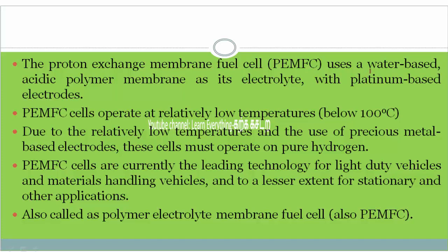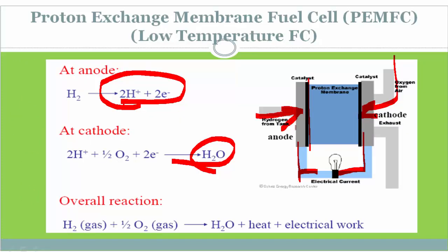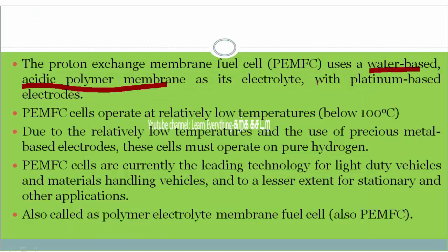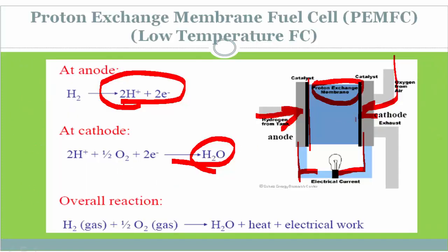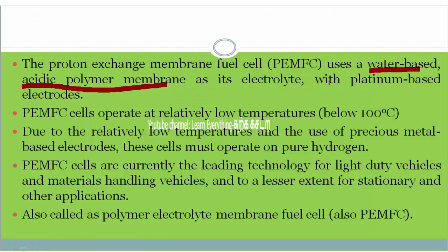The proton exchange membrane fuel cell uses a water-based acidic polymer membrane. There are two electrodes and one proton exchange membrane. This membrane should allow only protons to flow through it; gases are restricted from passing through. This is the key role of the proton exchange membrane.